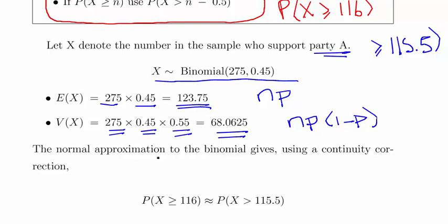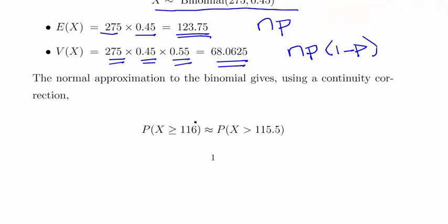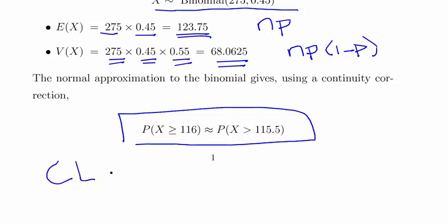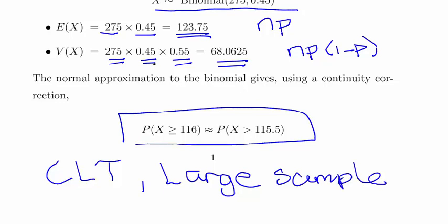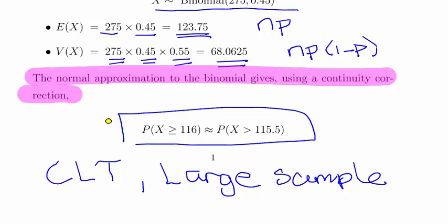The normal approximation to the binomial gives using the continuity correction factor. That's something we sort of established already. Just as a remark, just put in stuff about the central limit theorem, large samples, a little bit of theory, a justification, just to justify this approximation here. And it's basically based on the fact that it's a very large sample, 275.